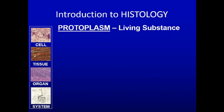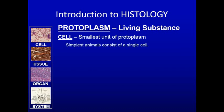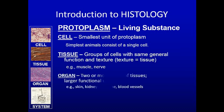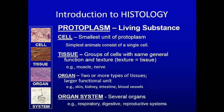Living substance is known as protoplasm. The smallest unit of protoplasm is a cell — some animals only have a single cell. So the cell is the single element or unit of life. Tissues are groups of cells with the same general function or texture: muscle, nerve, connective tissue, epithelium. More than two types of tissues makes an organ: skin, kidney, liver, blood vessels. And groups of organs make organ systems: the respiratory, digestive, reproductive, and nervous systems.